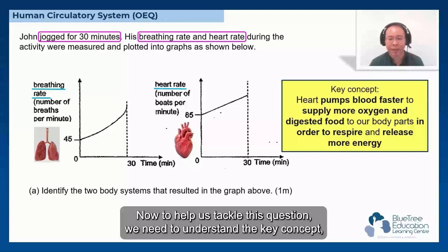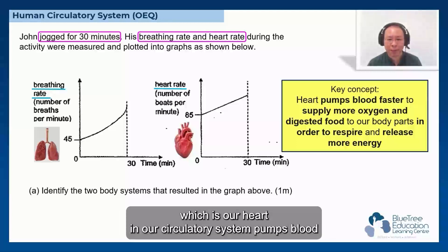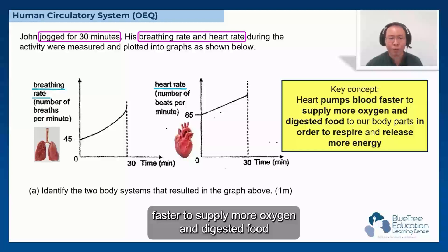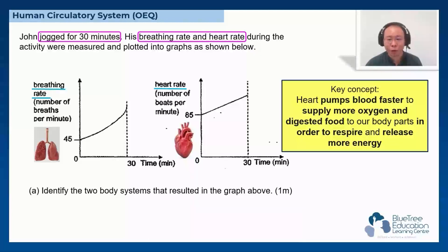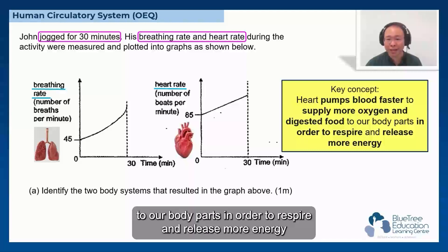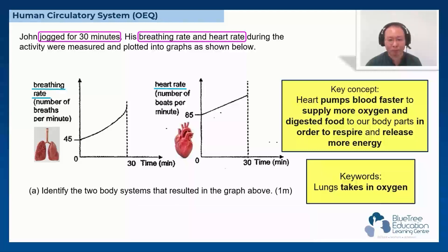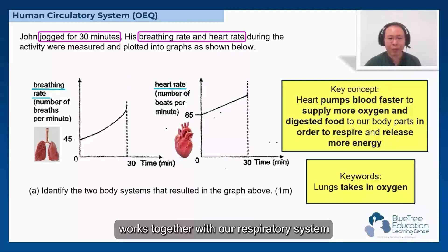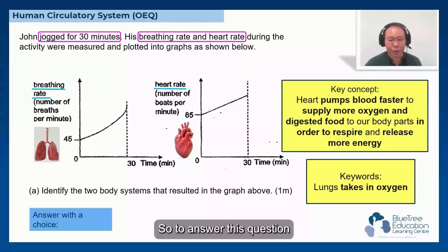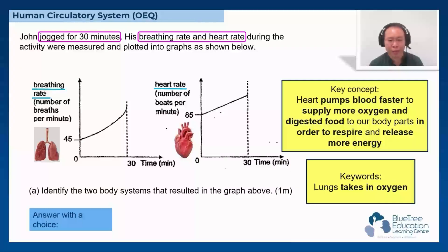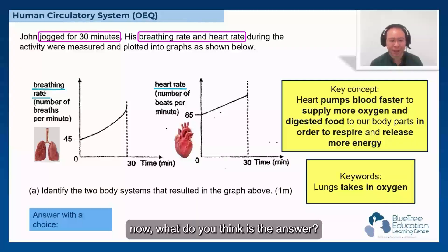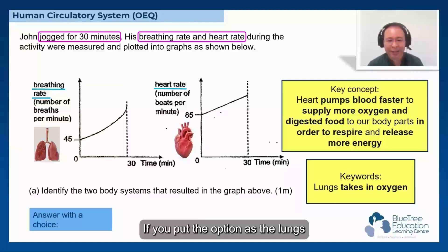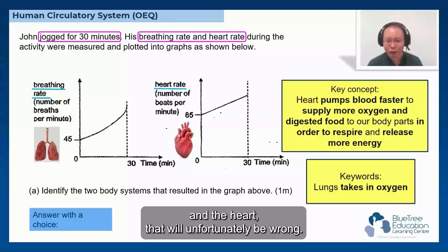To tackle this question, we need to understand the key concept: our heart in the circulatory system pumps blood faster to supply more oxygen and digested food to our body parts in order to respire and release more energy. Our circulatory system works together with our respiratory system, whereby the lungs take in oxygen. Now, if you put the answer as 'the lungs and the heart,' that will unfortunately be wrong.